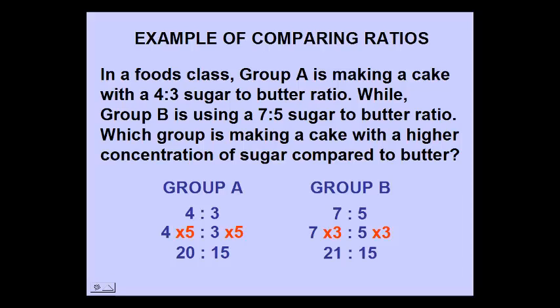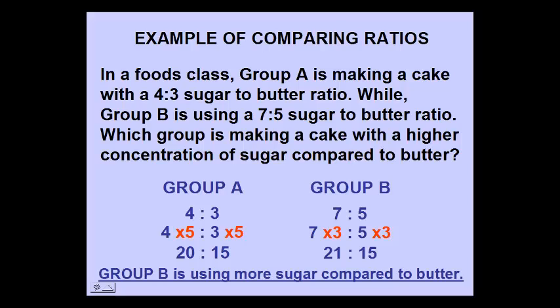Now we can compare the two groups and see which one has a higher concentration of sugar. Group B is using more sugar when compared to butter.